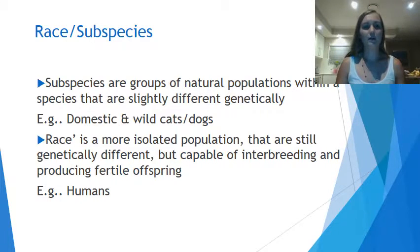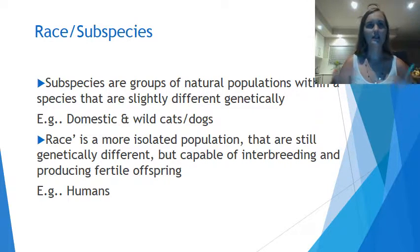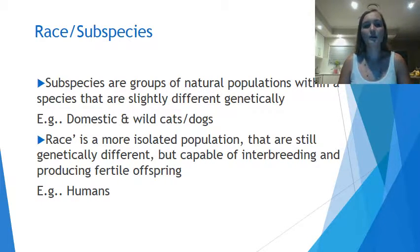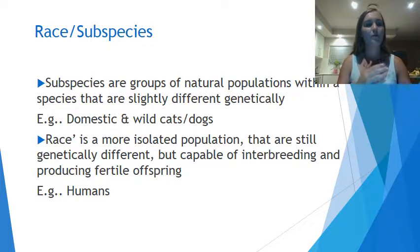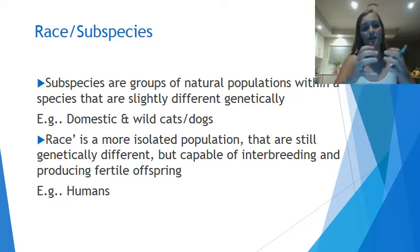So we talked about race and subspecies. A race is a more isolated population that is still genetically different but can interbreed — like humans, where we can have variation and look different, but we're essentially the same species and can produce fertile offspring. A subspecies is almost the step before forming two different species — natural populations within a species that are slightly genetically different. They can typically still breed, but there are almost two branches starting to separate.